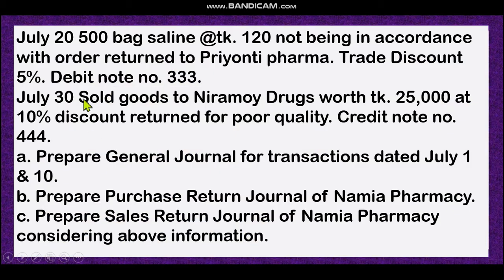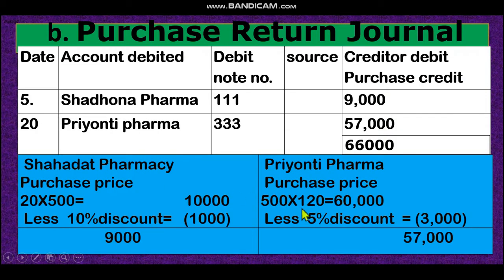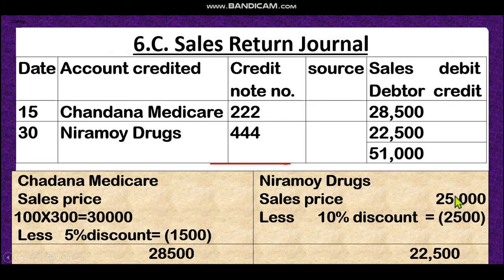Another sales return: July 30 — goods sold to Niramoy Drugs worth 25,000 taka at 10% discount returned for poor quality. We supplied goods of poor quality and they returned them. Sales price is 25,000 taka (given directly). Discount is 10%, which is 2,500 taka. So the return amount is 22,500 taka. In sales return journal and sales journal, the calculation process, box, and format are almost the same — just little changes in account headings.